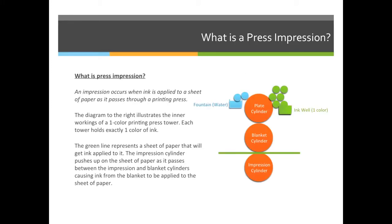Let's start off with what is a press impression. An impression occurs when ink is applied to a sheet of paper as it passes through a printing press. On the right hand side of your screen, I have drawn a diagram of what the interior of a printing press tower would be. In this example, this is only a one color printing press because there's only one inkwell or one section for ink to be applied. If this was going to print in orange and purple, this whole section might be for the orange ink and there would be an entire section next to it for the purple ink. But every time a sheet of paper goes between the impression cylinder and the blanket cylinder, it creates an impression and ink is applied to the paper. And that's what defines an impression.